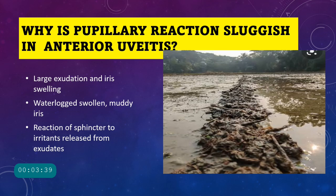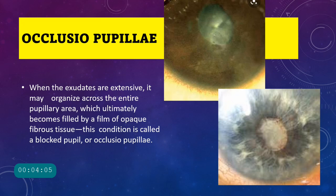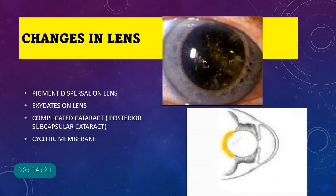The pupillary reaction is sluggish in anterior uveitis because the iris is waterlogged, swollen, and filled with exudation — like a muddy pond — preventing normal movement of the sphincter. Occlusio pupillae occurs when exudates entirely coat the iris and pupillary area, forming an opaque fibrous film blocking the pupil. This is distinct from seclusio pupillae.